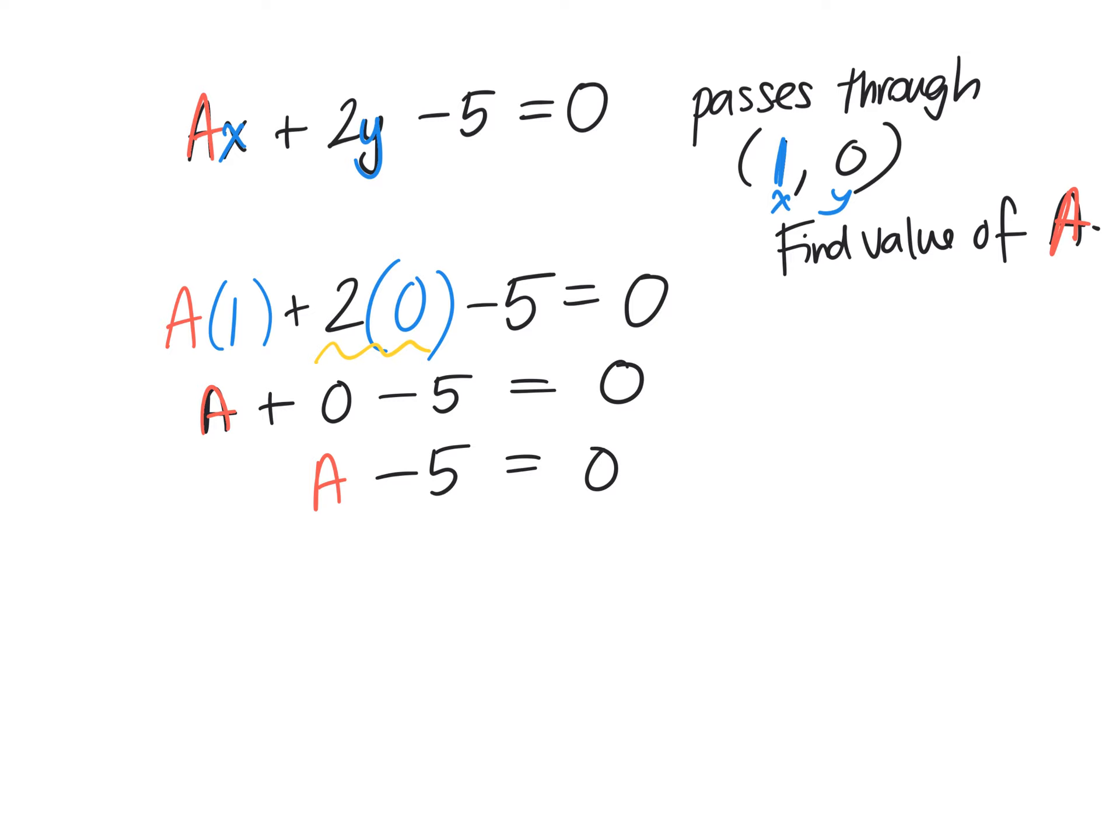What's the opposite of take away 5? Plus 5. That's how you get rid of it. So we have to add 5 to that side. So we've isolated A because we know that 1A and A is the same thing, right? You don't have to put a 1 in front, it doesn't change it. What's 0 plus 5? That's the final answer. A equals 5.